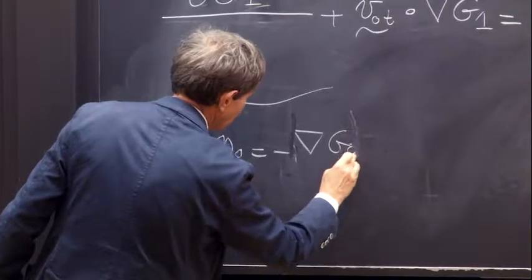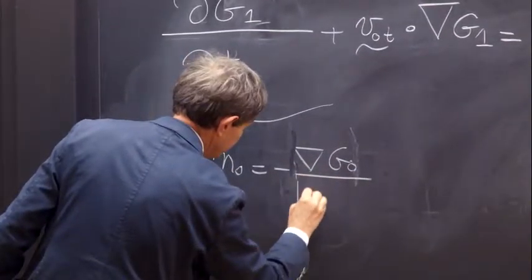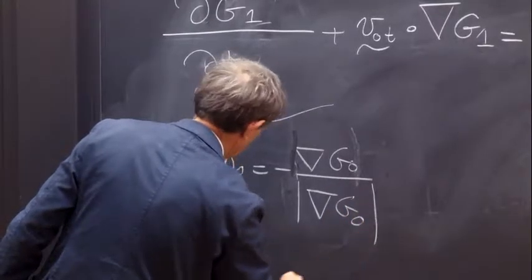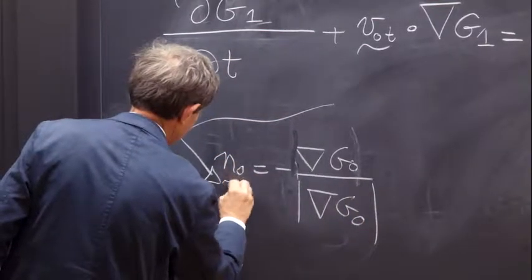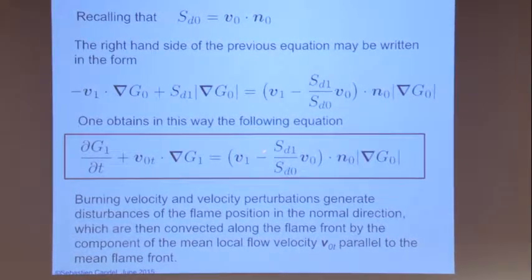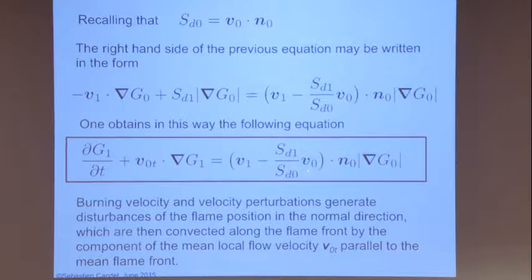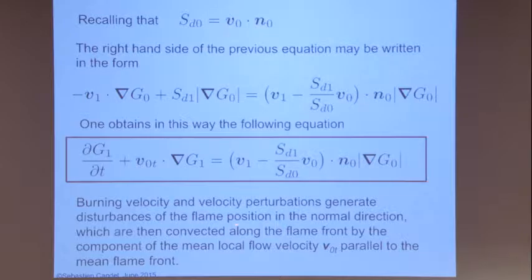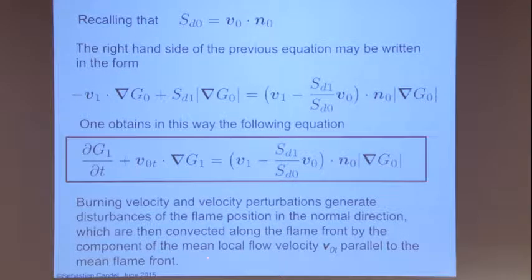It's the gradient divided by its modulus, because it's a unit normal. If you plug that in, this term becomes V1 minus SD1 over SD0, times V0 dot N0, times the gradient of G0 modulus. So burning velocity and velocity perturbations generate disturbances of the flame position in the normal direction, which are then convected along the flame front by the component of the mean local velocity V0T parallel to the mean flame front.